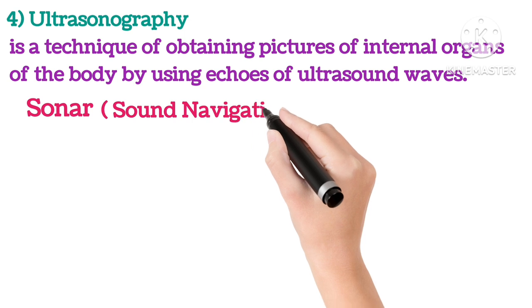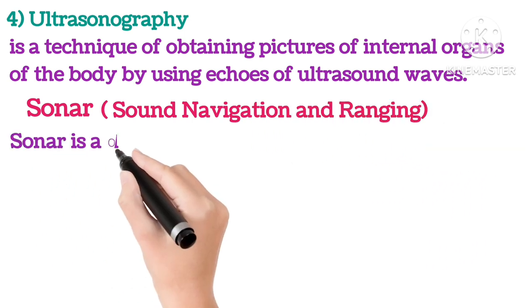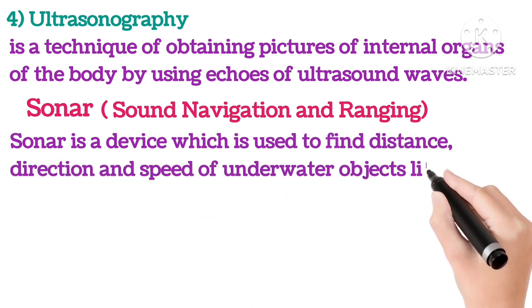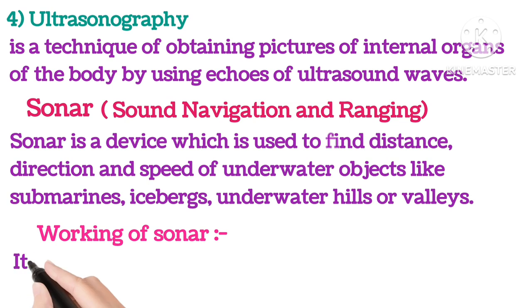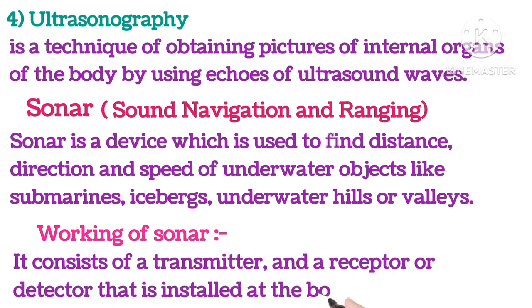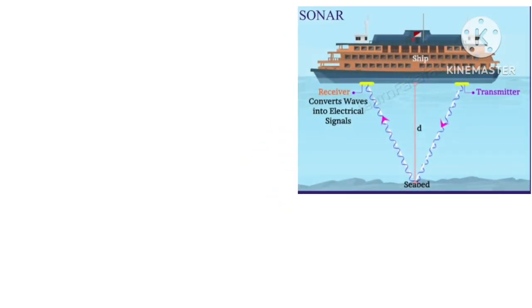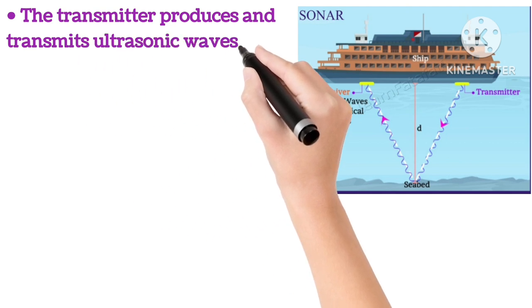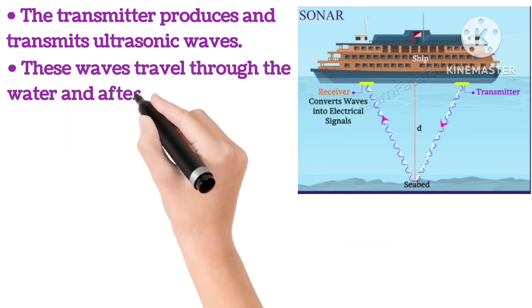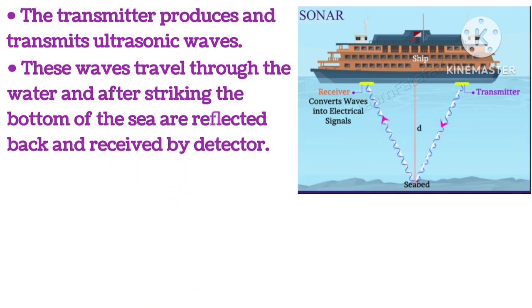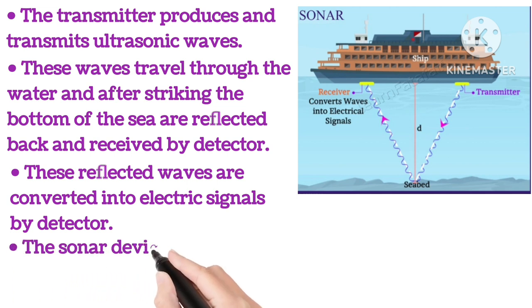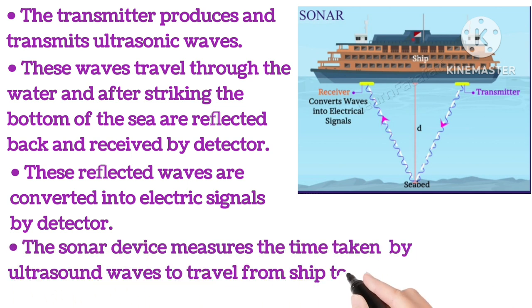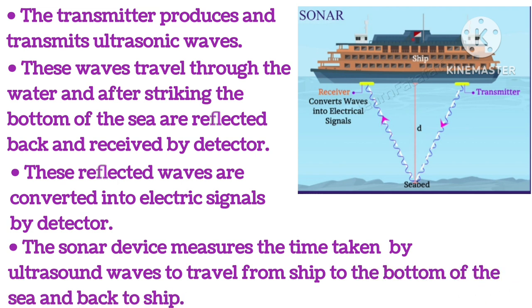Sonar (Sound Navigation and Ranging) is a device used to find the distance, direction and speed of underwater objects like submarines, icebergs, and underwater hills or valleys. It consists of a transmitter and a receptor or detector installed at the bottom of the ship. The transmitter produces and transmits ultrasonic waves; these waves travel through the water and, after striking the bottom of the sea, are reflected back and received by the detector, which converts them into electric signals. The sonar device measures the time taken by the ultrasonic waves to travel from the ship to the bottom of the sea and back.